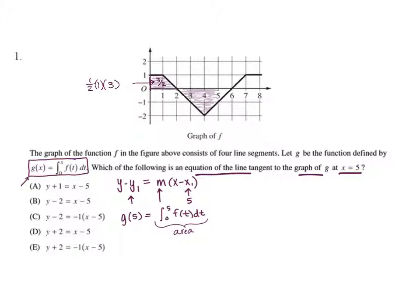Over here we divide this up into a triangle: one-half times base 2 times height 2 gives 2, but since it's bounded below the x-axis, that's negative 2. Then for the other portion, another trapezoid: one-half times height 1 times sum of bases 2 plus 1 equals 3, so negative three-halves bounded below. Combining all of that gives us negative 2, so y1 equals negative 2.